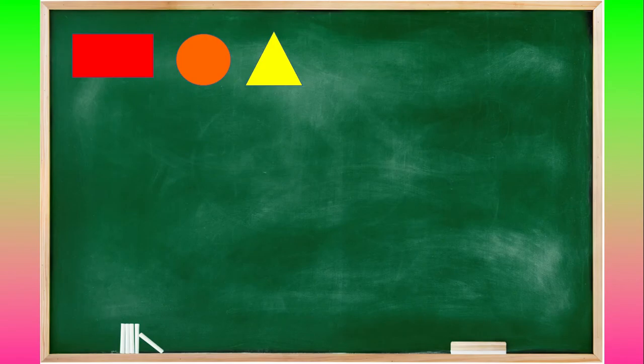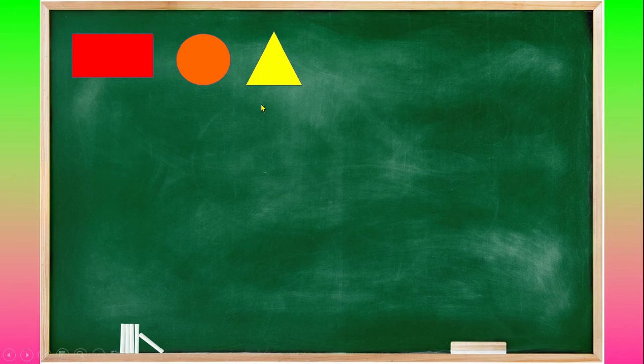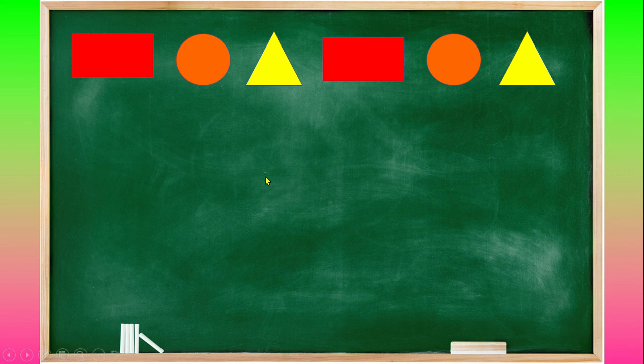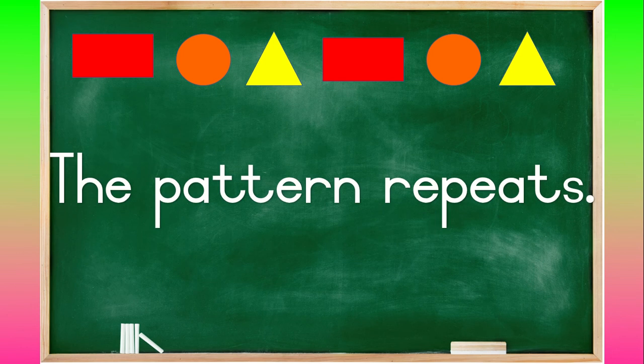So now we have our first pattern. We have a red square, orange circle and the yellow triangle. Then we have another red square, orange circle and yellow triangle. So how would we describe this pattern? Is it getting bigger, smaller or repeating itself? The pattern repeats itself.